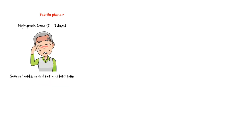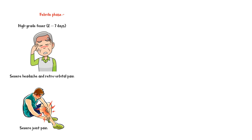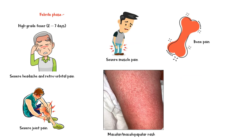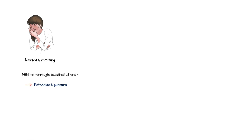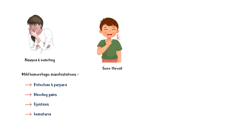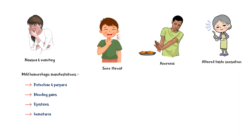In addition, the patient may complain of severe headaches and retro-orbital pain, severe joint pain, severe muscle pain, and bone pain. A macular or maculopapular rash is also seen, predominantly on flexor surfaces. Individuals may also have nausea and vomiting, and mild hemorrhagic manifestations including petechiae and purpura, bleeding gums, epistaxis, and hematuria. Other symptoms in this phase may include sore throat, anorexia, altered taste sensation, and lymphadenopathy.